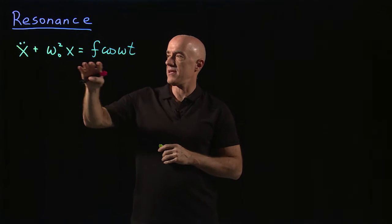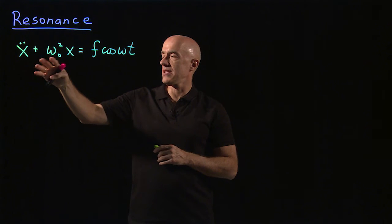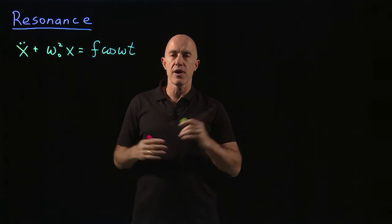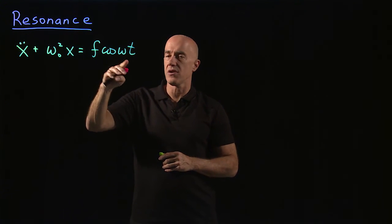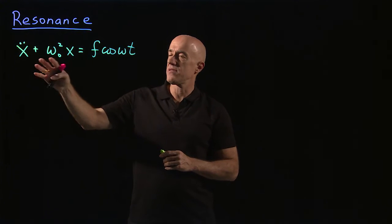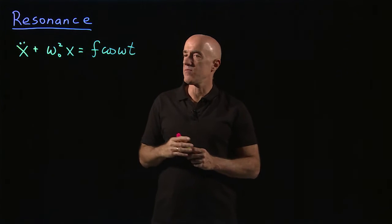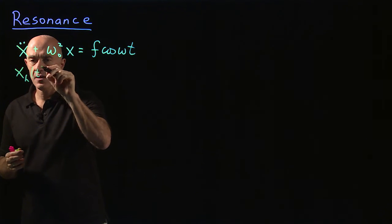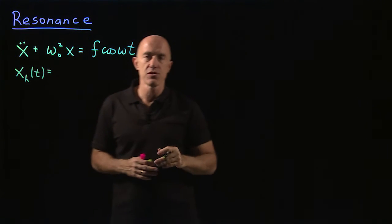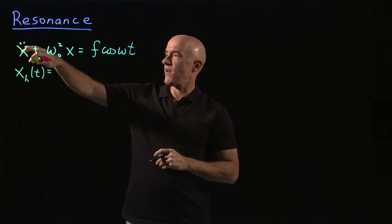The idea here is to solve this equation. This is a second-order linear constant coefficient equation that has an inhomogeneous term, so we know how to solve that. We will solve this equation when omega naught and omega are different frequencies, and then we'll take the limit as omega goes to omega naught. So let's begin with the homogeneous solution. We can go through our usual procedure of finding it, but it's actually quite simple in this case.